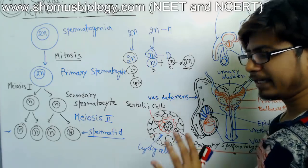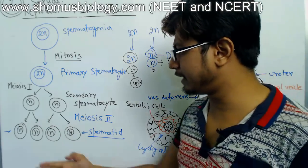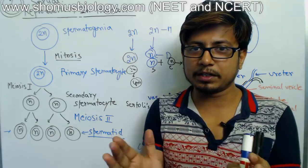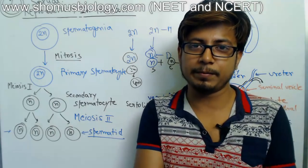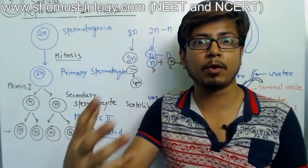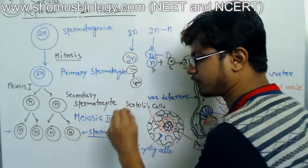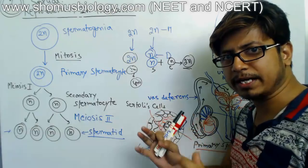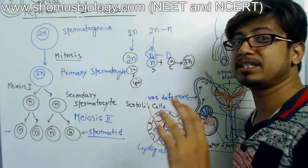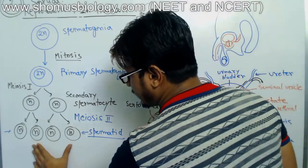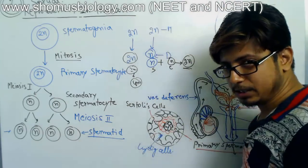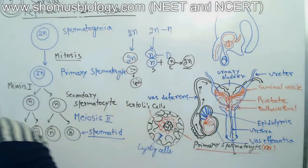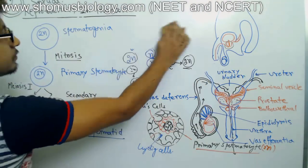Once spermatids are produced, they carry only n (haploid) chromosomes, but they are not ready to function as sperm yet. Humans have a totally different structure for sperm and ovum — the male and female gametes also vary in morphology. Looking at an adult mature sperm, it has different sections: a head, a collar, a cell body, and a tail. So the spermatids need to be structurally modified before we can call them mature sperm.